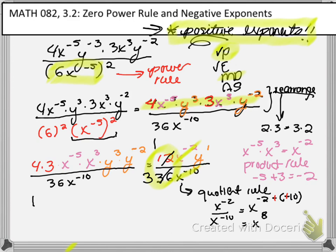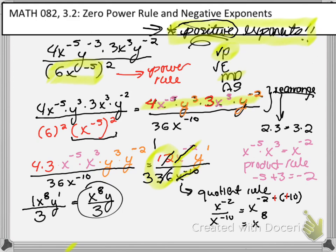That x to the eighth is in the numerator. And then we have y or y to the first power. Again, it's up to you how you want to write that. And then we have our three. Remember the x to the tenth, he's gone now because we simplified the x to the negative second power and x to the negative tenth power. So let's look at this and make sure that we have positive exponents. Looking at this, I don't see any negative exponents. So my final answer, I will probably leave off of those ones just to make it a little bit nicer and simpler. So my final answer would be x to the eighth y divided by 3.